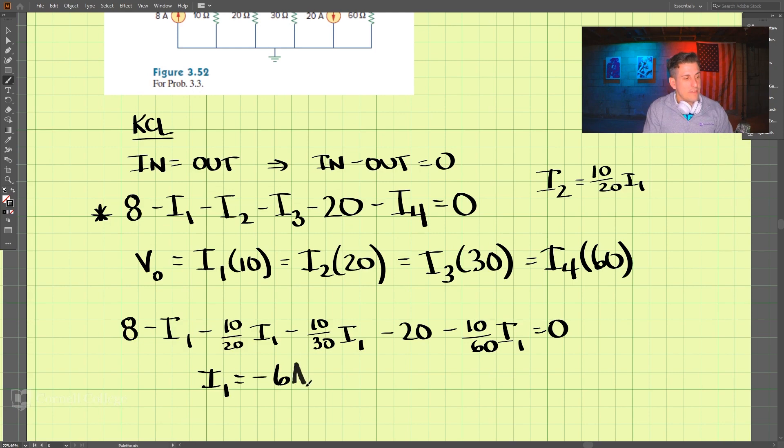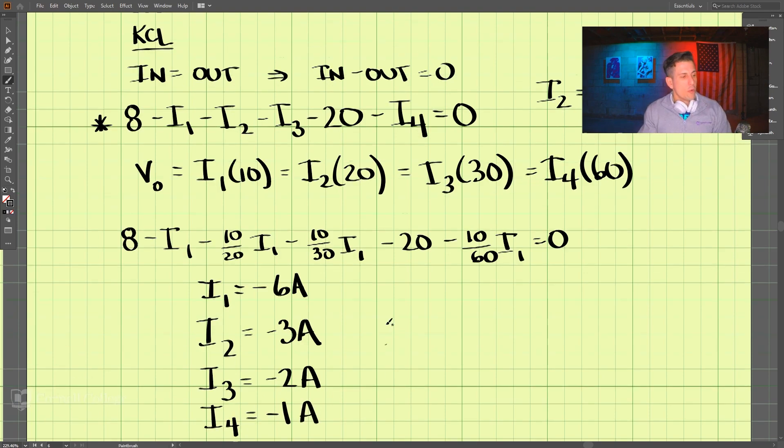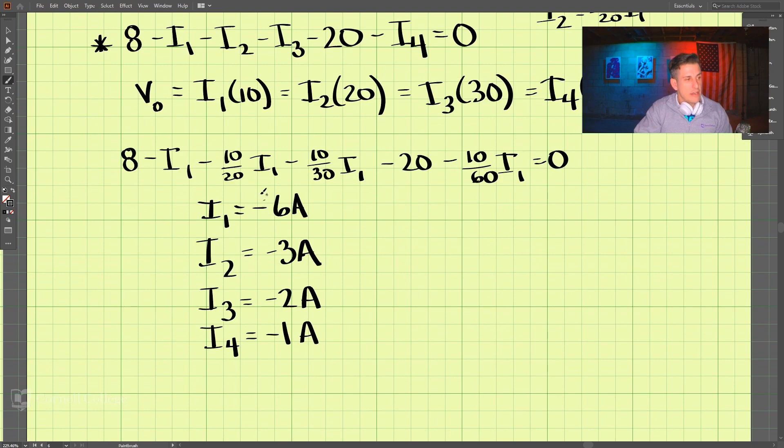And once we know I1, we can put that in for I1, and then use the same technique for I2. We put in all terms for I2, and I2 comes out to be negative 3 amps. I3 is negative 2 amps, and I4 is equal to negative 1 amp. So all of these are actually in the opposite direction. These are actually flowing this direction, as you can see, by the negative signs here.